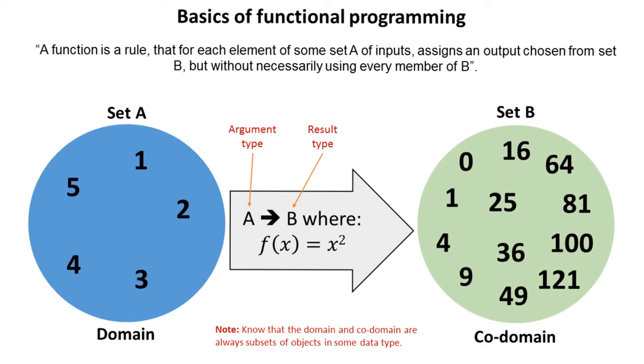Note that the domain and codomain are always subsets of objects in some data type. For example here, both the domain and codomain are subsets of the infinite set of numbers, or integers in this case.